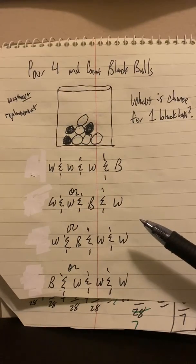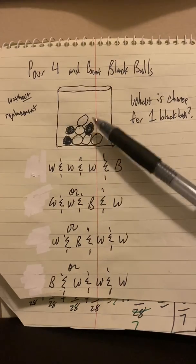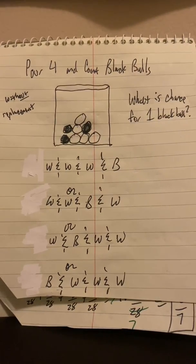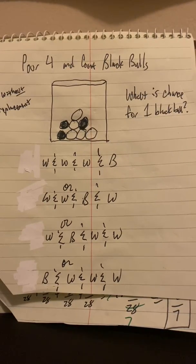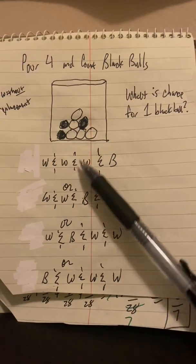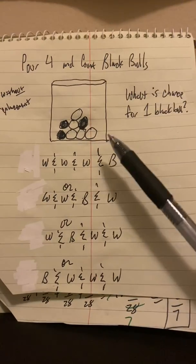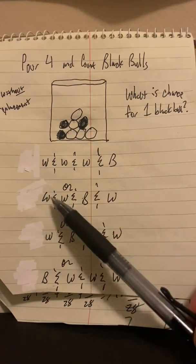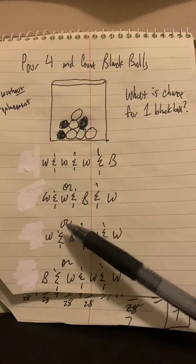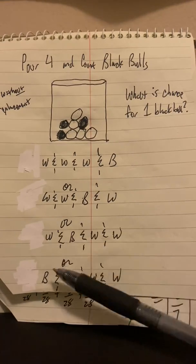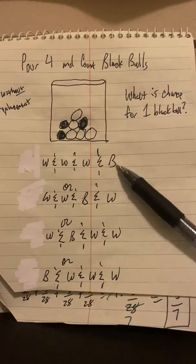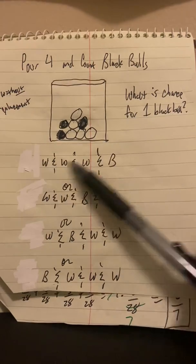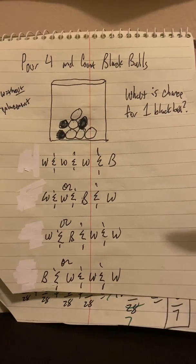We're going to ask what is the chance for one black ball? So same experiment, pouring four, counting blacks from this population of eight, five white, three black. What is the chance for one black ball? Well, what are the equally likely outcomes? How many ways can we get a black ball? We could get white and white and white and then black, thinking about it as taking out one at a time. We could get white and white and then black and then white. We could get white and black and white and white. We could get black and white and white and white. So in other words, there's four slots and the one black ball could fill any one of the four slots. So there's four different ways that could happen. That's a counting problem.